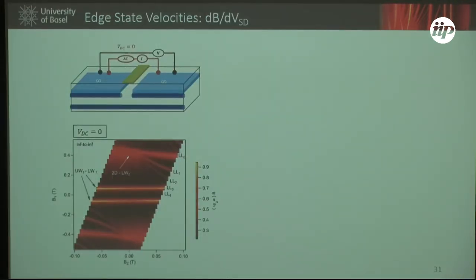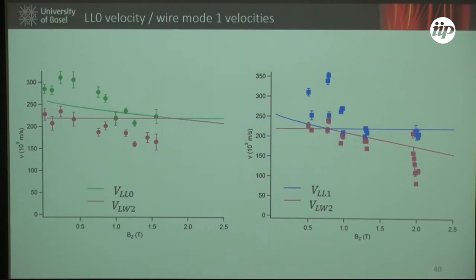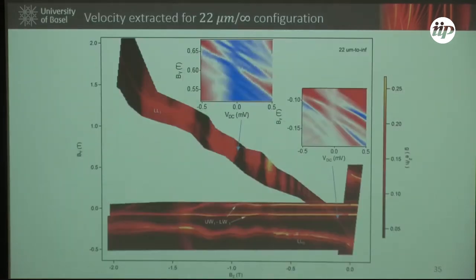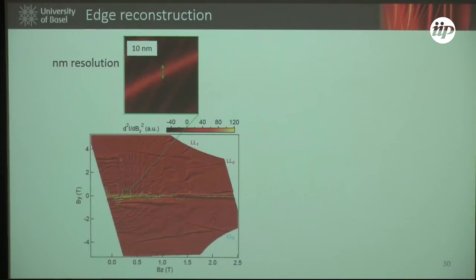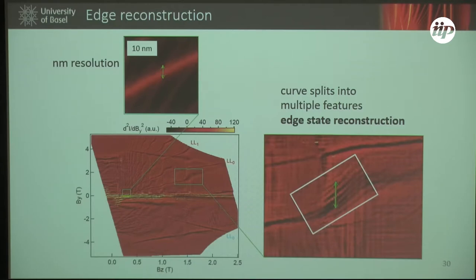We can also measure the edge-state velocities and map these over large ranges, but I don't have time to go through this. Regarding a question about whether the splitting near depletion could be related to the fractional quantum Hall effect — I don't think so; what we're following is one of the integer Landau levels, just the usual integer quantum Hall state. But in principle this technique could be used to study fractional effects; we haven't gone to high enough fields yet in this experiment, but we're planning to do so in the future.